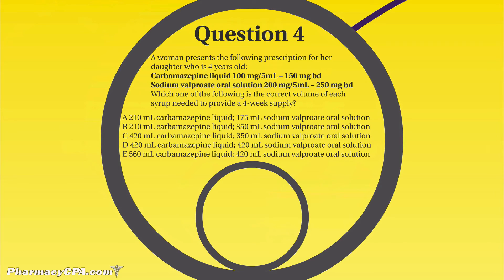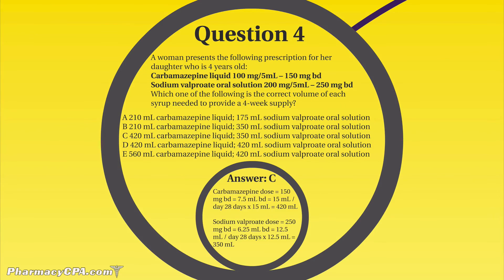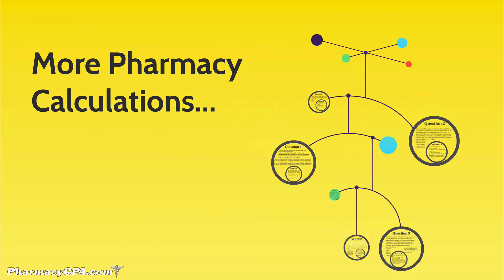You do the same calculation with the sodium valproate solution, then pick the correct answer. In this case it's C: carbamazepine dose 150 milligrams twice daily, and sodium valproate coming out to 350 mils — that lines up to answer C quite well.